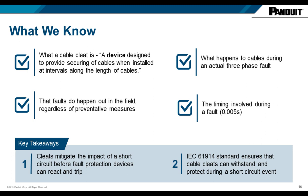To summarize: we now know what a cable cleat is — a device designed to secure cables. We understand what happens to cables during an actual fault, we acknowledge that faults do happen in the field, and we understand the timing involved — five milliseconds for the most destructive forces. The key takeaways: cleats do mitigate the impact of a short circuit before other fault protection can react and trip, and the standard IEC 61914 ensures that cable cleats can withstand and protect during that short circuit.